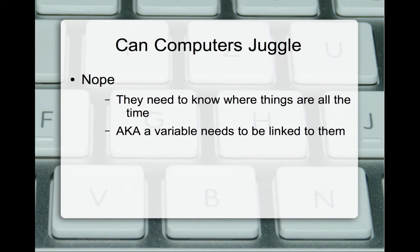Can a computer juggle? And the answer is no. Computers are not smart enough to juggle. Because when we juggle, we lose track of at least one up to n of our things that we're juggling.